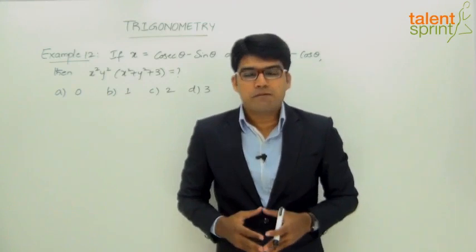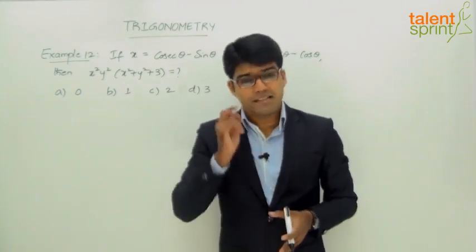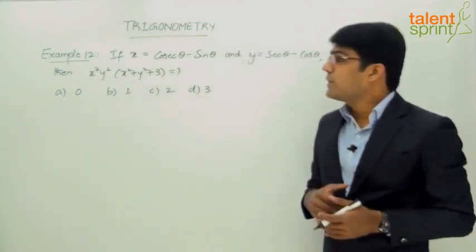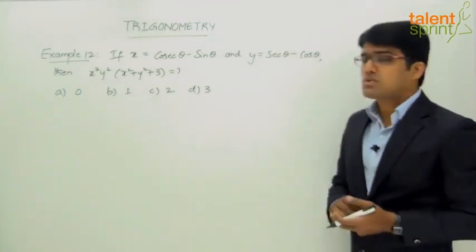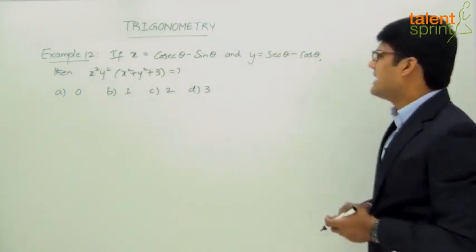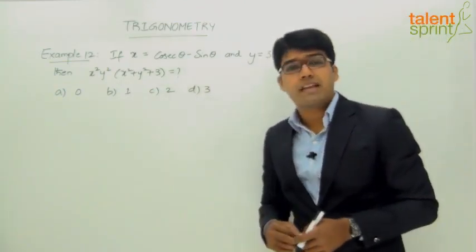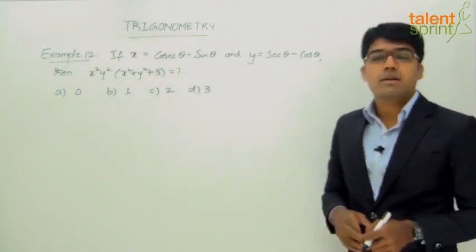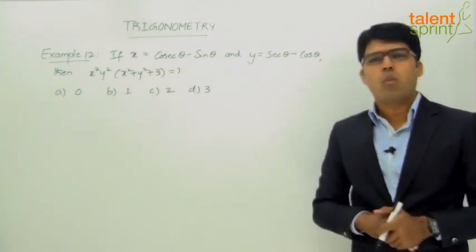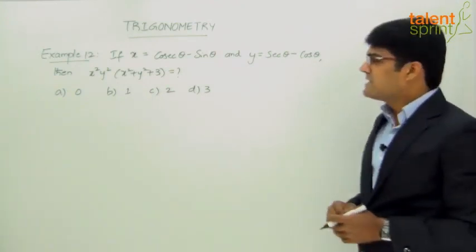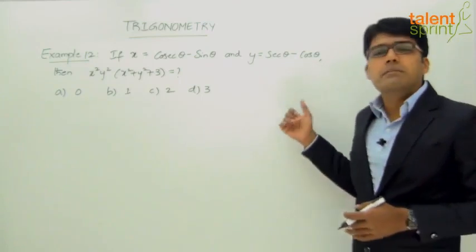Let us now look at another example based on what we discussed previously. Example 12: If x = sec θ - sin θ and y = sec θ - cos θ, then what is the value of x²y²(x² + y² + 3)? The answer options are 0, 1, 2, and 3. As we see, the answer options are independent of theta.